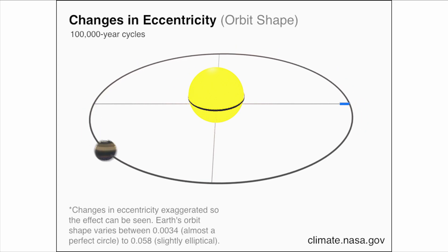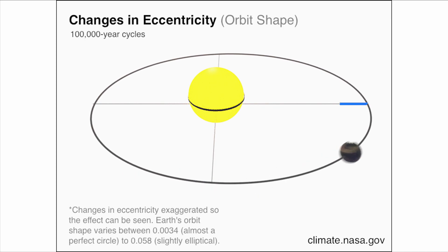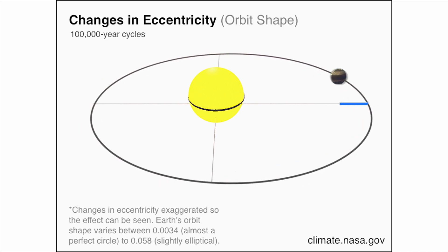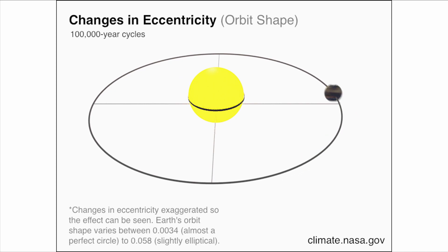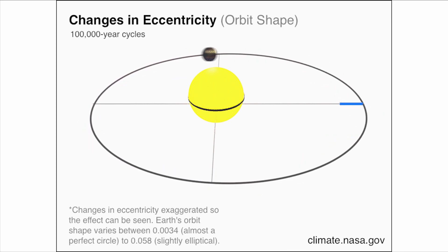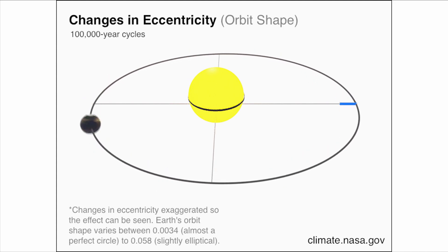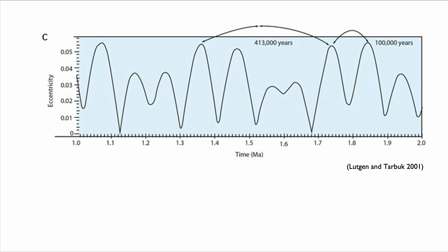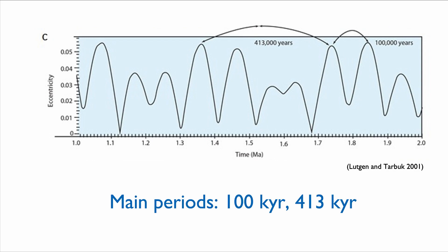Eccentricity is essentially the shape of the Earth's orbit. As shown in this NASA animation, this shape is changing through geological time. How eccentric that orbit is — how much of an ellipse it is as opposed to something more circular — really determines how much energy the Earth is receiving in total. The two main frequencies we see over geological timescales are cycles of 100,000 years and 413,000 years — relatively long-term cycles.